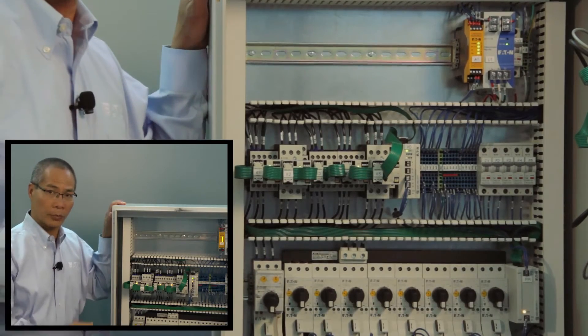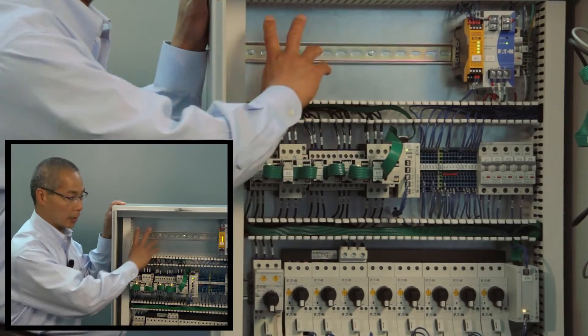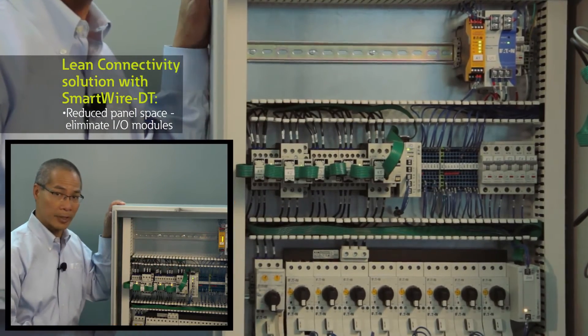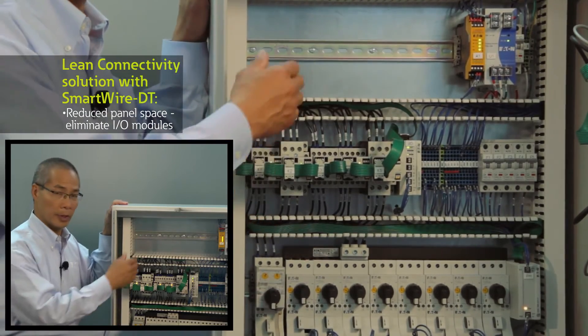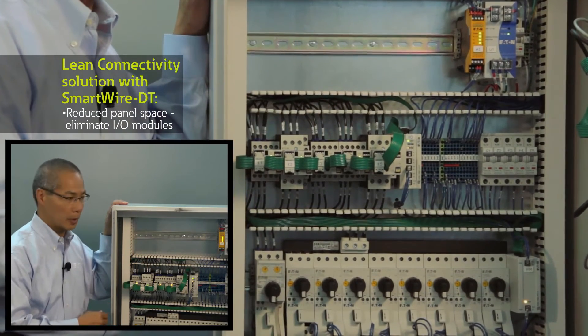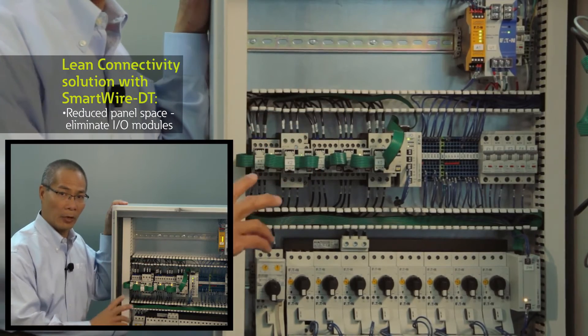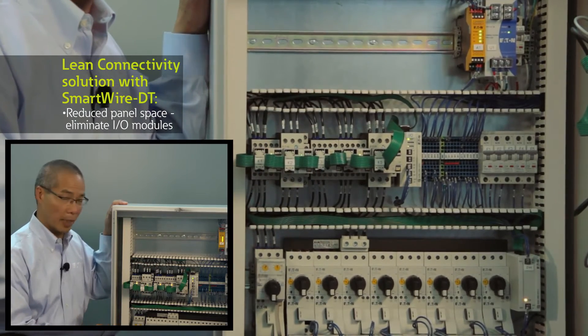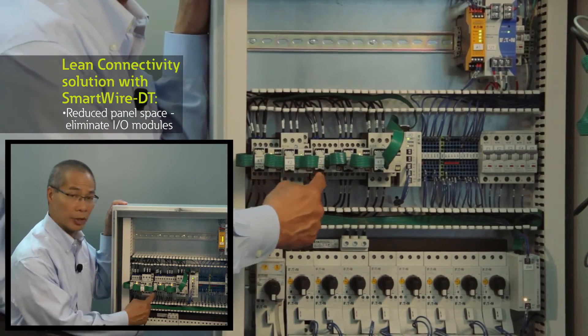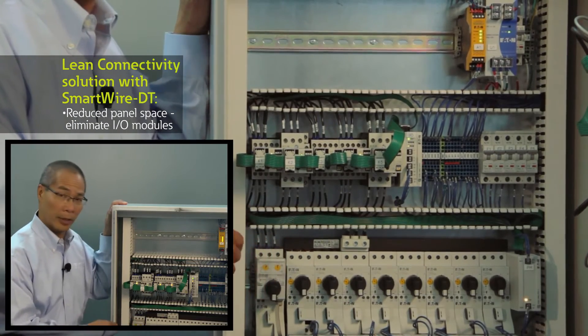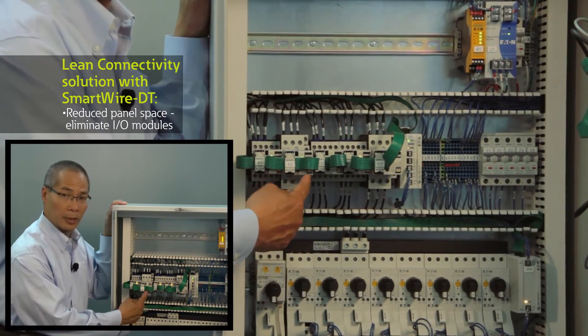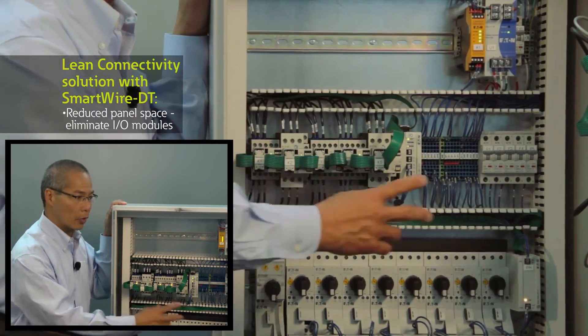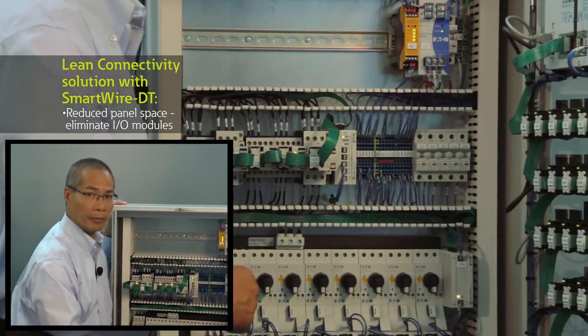One of the things you'll notice with the SmartWire DT panel is this extra space that we have in the top of this cabinet where the previous conventional PLC was located with the conventional I/O modules. We've basically eliminated the I/O modules from the PLC because we have the I/O point connections on each and every device. That's what we do with a SmartWire DT chip that's inside the smart module that sits on top of the contactor or attaches to the back of the push-button device.